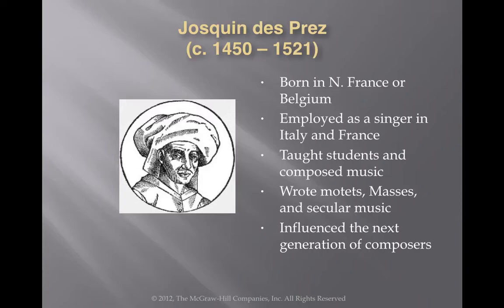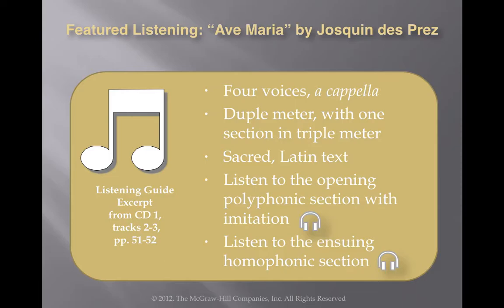One of the main composers we will be looking at in this period is Josquin de Prez, a French composer who wrote numerous motets, masses, and secular music. One of his pieces is a sacred work called Ave Maria, which goes back and forth between a polyphonic texture and a homophonic texture. We will listen to a polyphonic section featuring multiple melodies happening at different times.